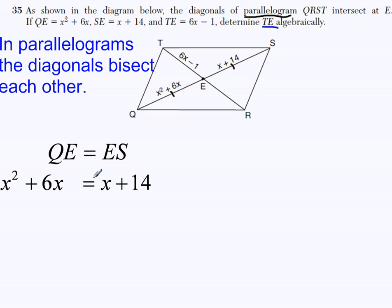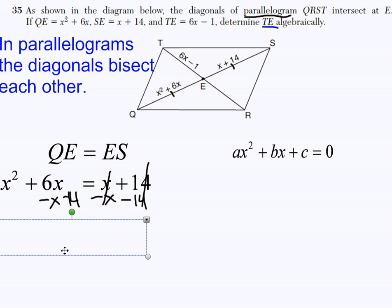You should know that now you're dealing with a quadratic. And the way to solve a quadratic is to make it look like this. So, I want to set it equal to 0. I'm going to move the X to this side. That's going to cancel out the X's here. And I'm going to move the 14 to this side. That's going to cancel this out here. I'm going to be left with 0 on the right side. And I get X squared plus 5X minus 14 equals 0. 6X minus X is 5X and that negative 14.